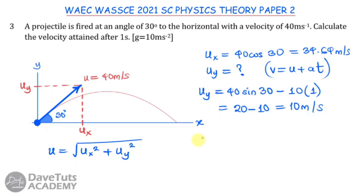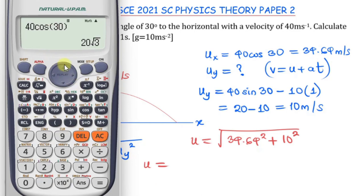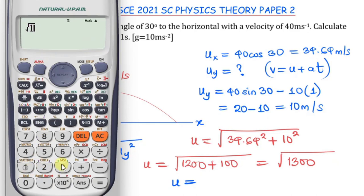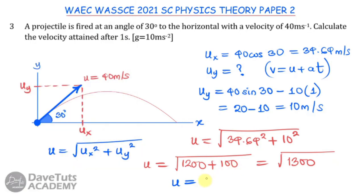The resultant velocity is the square root of ux² + uy² = √(34.64² + 10²) = √(1200 + 100) = √1300 = 10√13 ≈ 36.06 m/s. This is the velocity obtained after one second of launch.